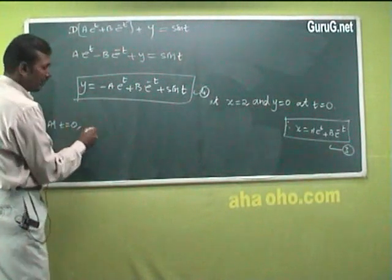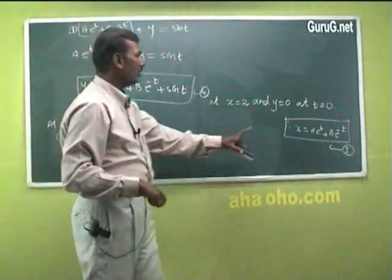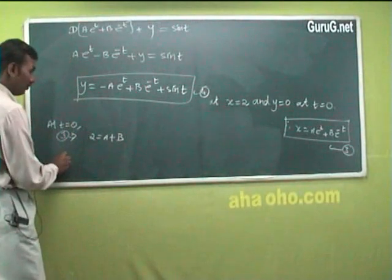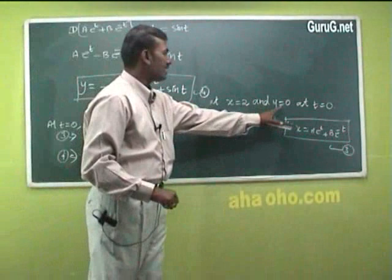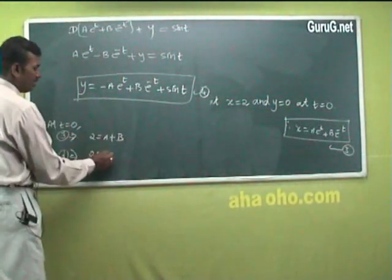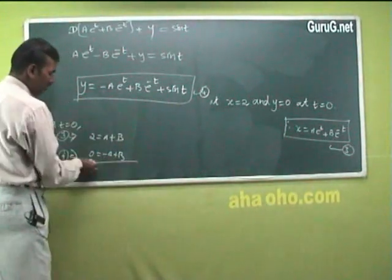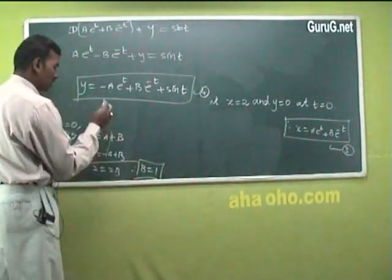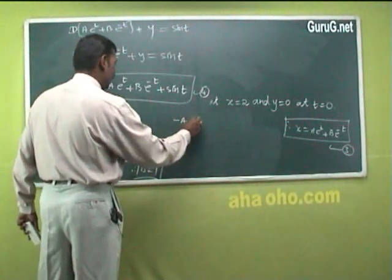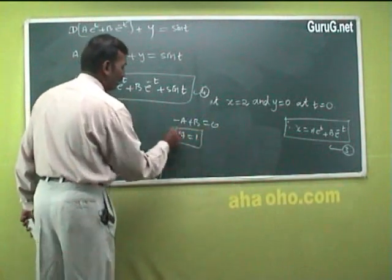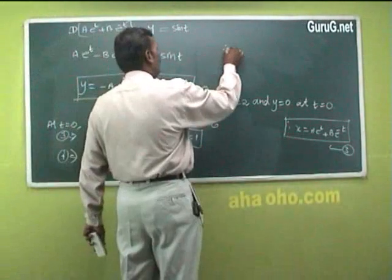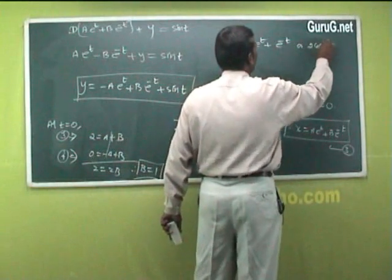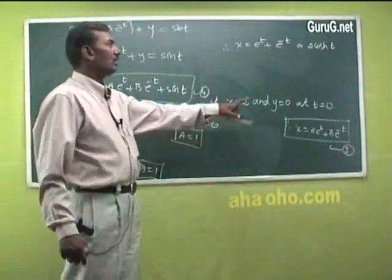At t equal to 0, equation 3 gives: 2 equal to a plus b. Equation 4 gives: 0 equal to minus a plus b, and sin 0 is 0. Adding these two: 2b equal to 2, so b equal to 1. Substituting: minus a plus b equal to 0, so a equal to 1. Therefore x equal to e^t plus e^(−t), which is nothing but 2·cosh t.